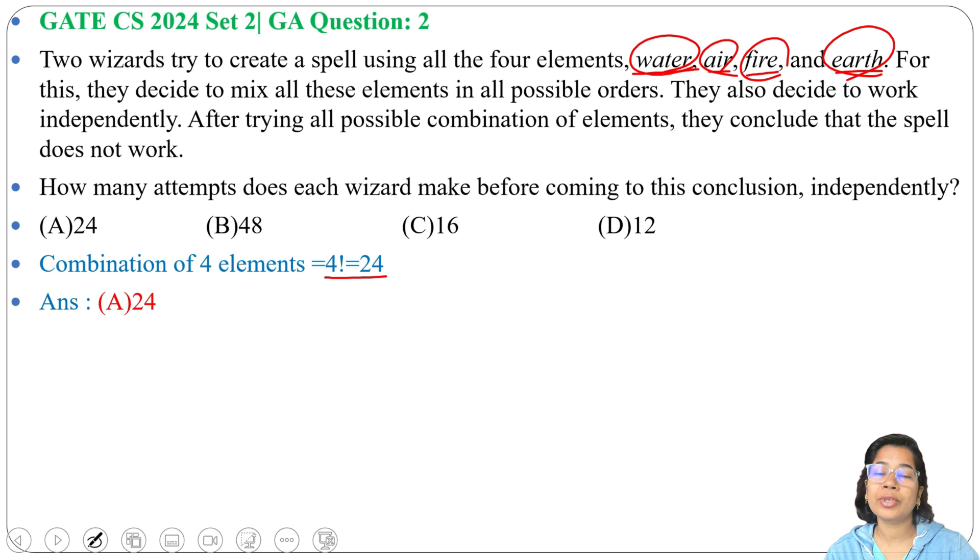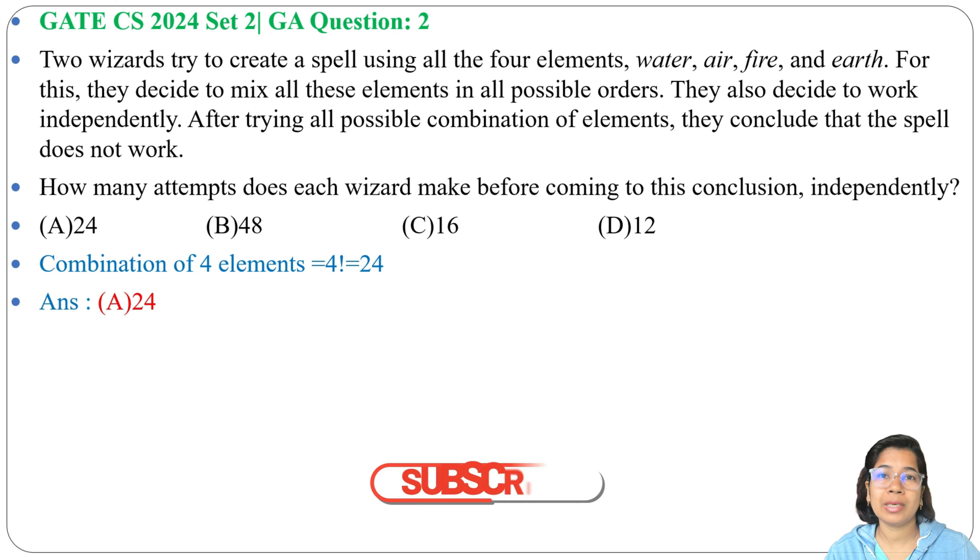each wizard make before coming to this conclusion that it doesn't work. They need to try 24 times. This question is from Combinatorics. If you know basic Combinatorics formulas, you can easily solve this question.